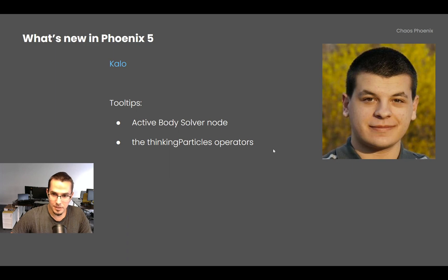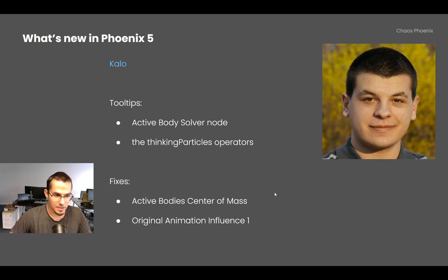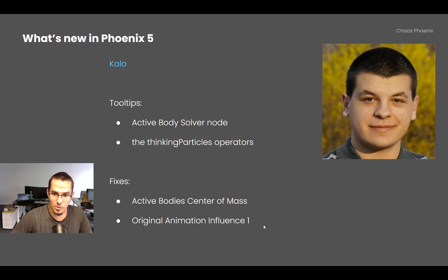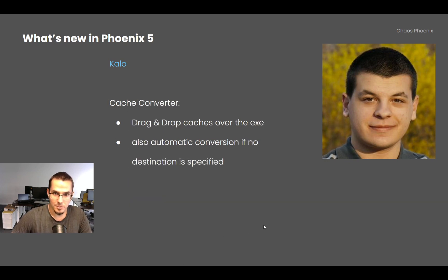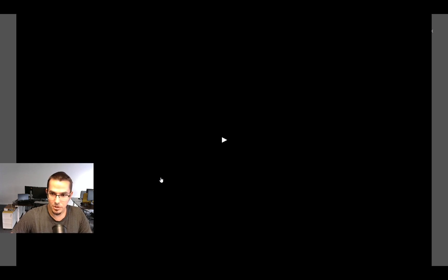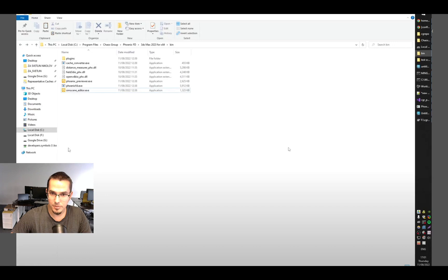Kao added fixes to the active body solver and the thinking particles operators, including fixes to the active body center of mass and to the original animation influence, which when set to 1 was not following the original animation correctly. The cache converter now supports drag-and-drop of caches directly onto the executable file — Aura files are converted to VDBs and VDBs are converted to Aura files, no command-line needed.